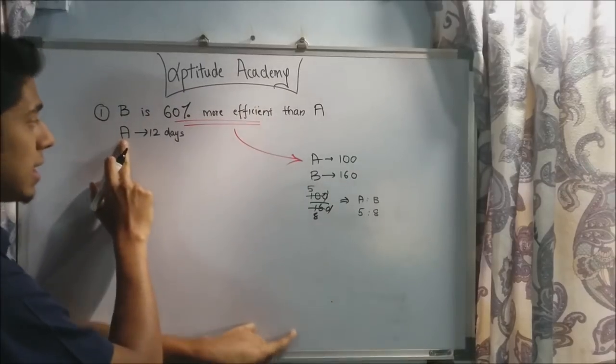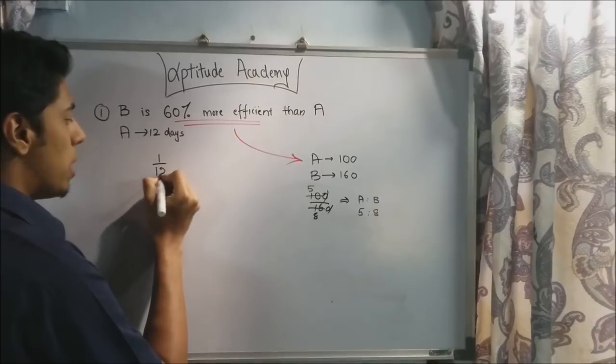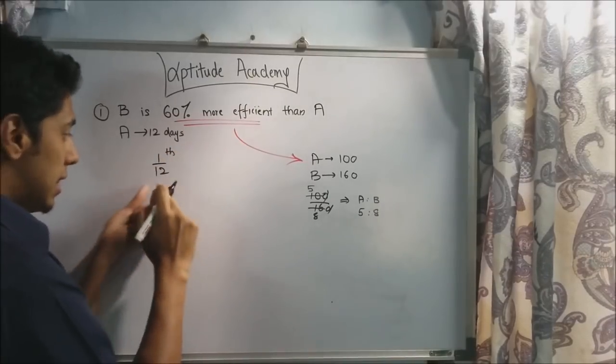Now consider this. They have given that A finishes the work in 12 days. So every day, A will be finishing 1 by 12 of the work. This is 5.